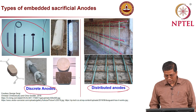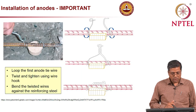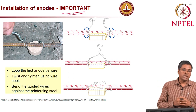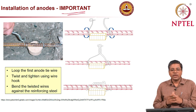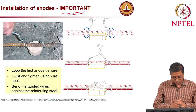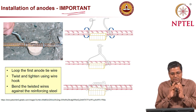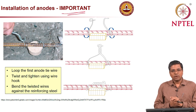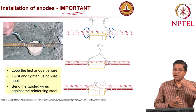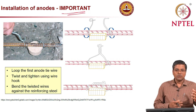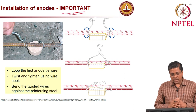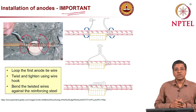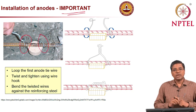A critical installation tip: any new technology fails if implementation is poor. The tie wire coming from the anode must be tied very well to the rebar. Importantly, wherever you tie the anode, rust must be removed from the steel surface because rust is an insulator. Failure to remove rust will prevent a good electrical connection, and the system will not function.